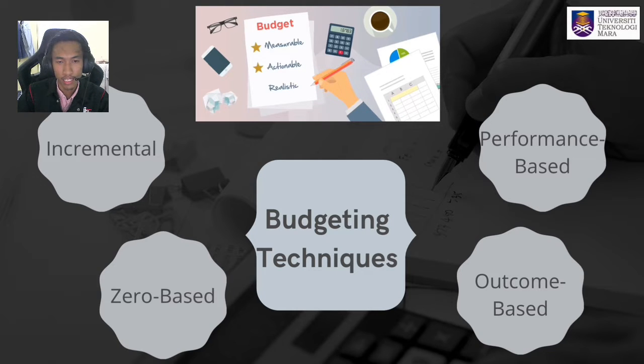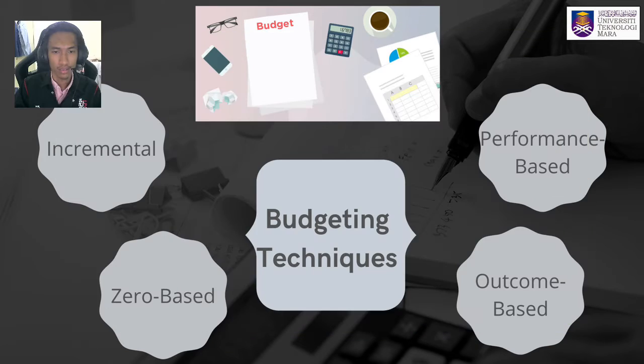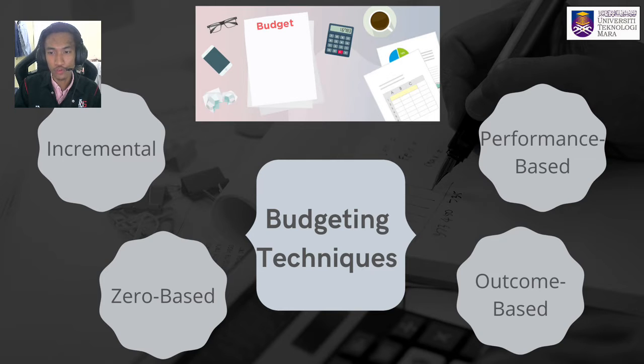There are a few budgeting techniques. The first is incremental, defined as a budget prepared using last year's actual figures and adding or subtracting a percentage to obtain the current year's budget. It is simple and easy to understand. For zero-based budgeting, it begins by assuming that all department budgets are zero and must be recreated from scratch — all expenses must be justified and approved for each new period.